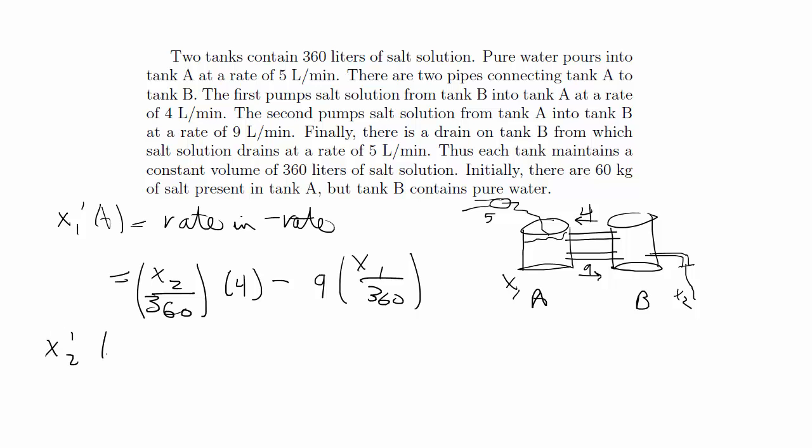So let's do that now. So x prime 2 again is rate in minus rate out. So that's going to be the rate going in is x1 over 360 times 9 minus the rate going out here is 4 times x2 over 360. So initially this is just pure water, but eventually salt solution will come in and will leave again. And then we also have to consider, this is what makes it different from the last problem,